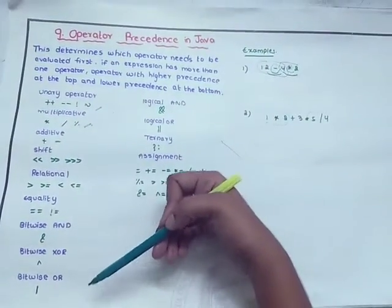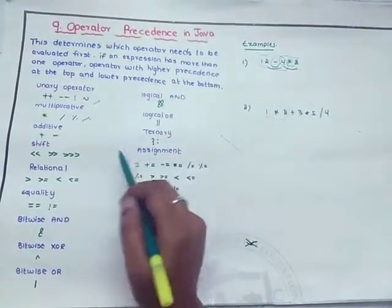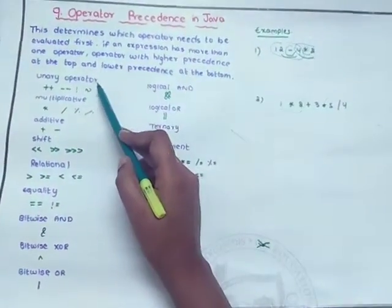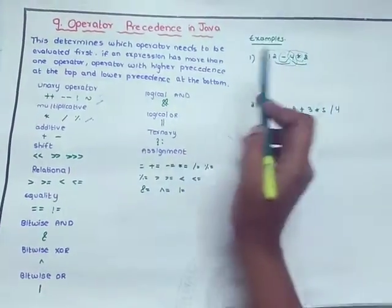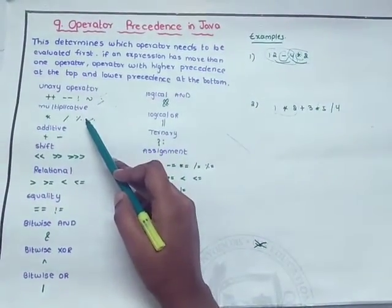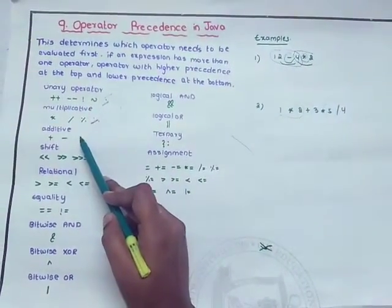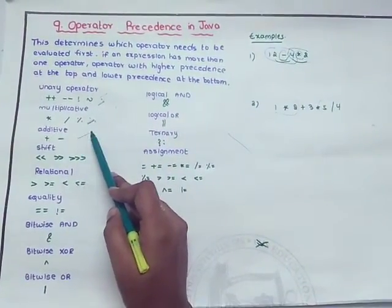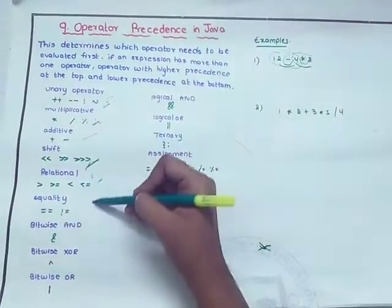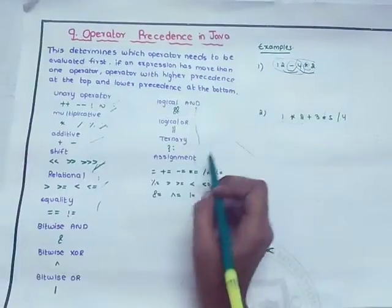If you find a unary operator in an expression, then unary operator should be evaluated first. Multiplicative operators have second priority, additive operators have third priority, shift operators have fourth priority, and in the same way this is the priority order of all operators. At last, assignment operators have the lowest priority.